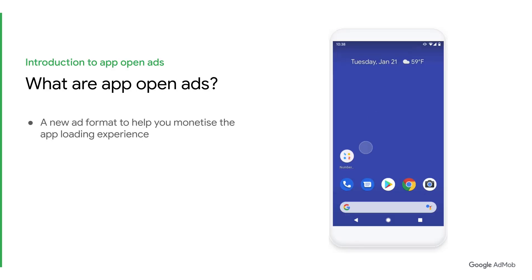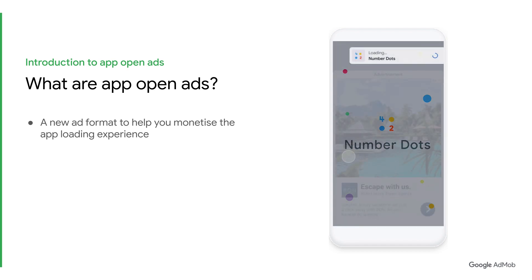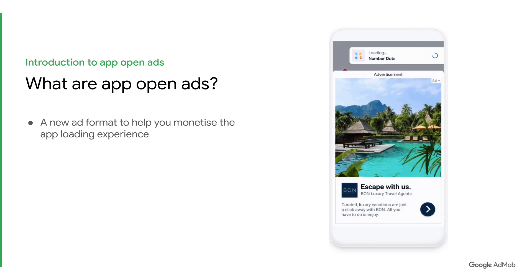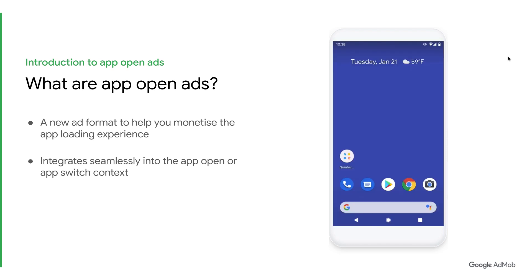AppOpenAds is an ad format that enables developers to monetize their app's loading experience during the app open or app switch context. In other words, you can display an app open ad when a user opens or switches back to your app. We have designed this ad format to seamlessly integrate into an app's open or switch context to offer the best user experience.